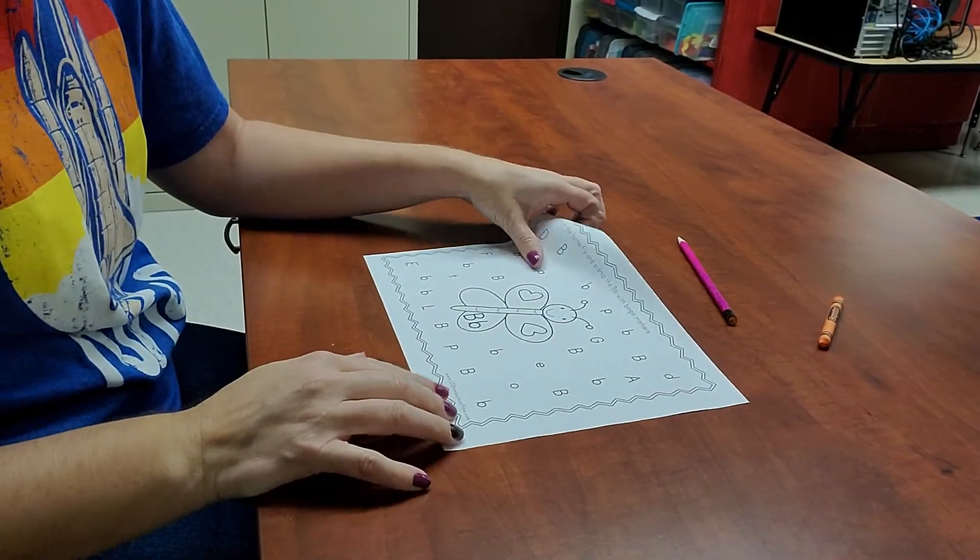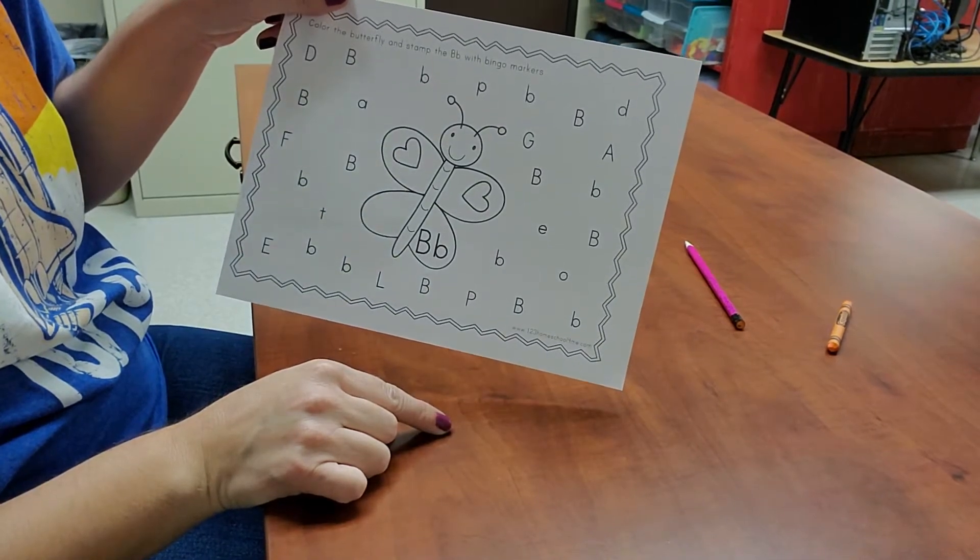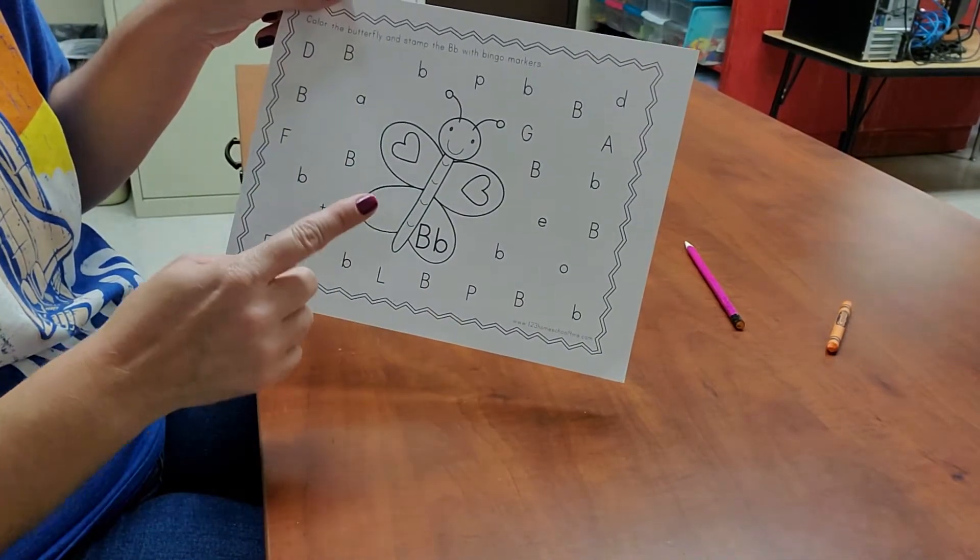Hello, my friends. All right, it's time to get back to learning. So we're going to start with our letter B paper. B for butterfly.